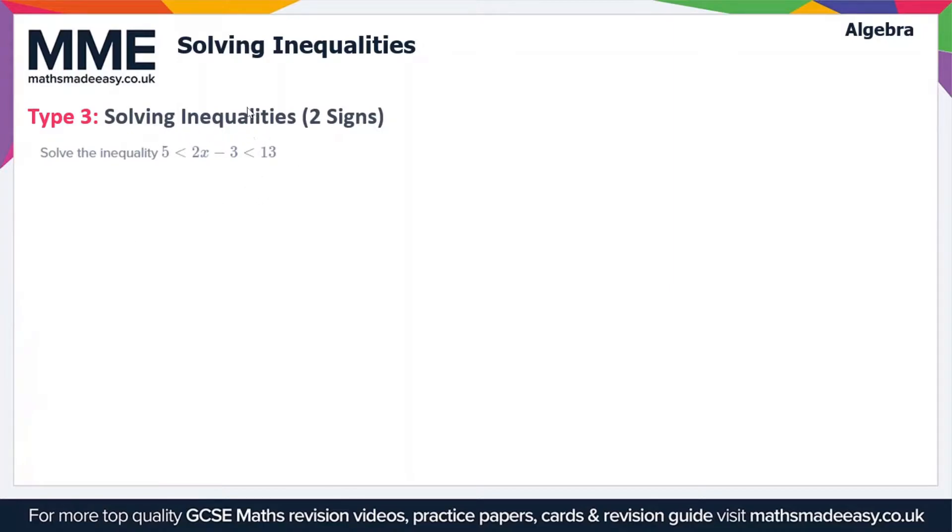So in this first type of question, we're looking at solving inequalities that have two signs. So here we have to solve the inequality 5 is less than 2x minus 3, which is less than 13.